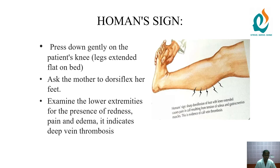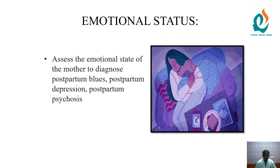To check Homan's sign and rule out deep vein thrombosis (DVT): press down gently on the patient's knee with the leg extended flat on the bed, and ask the mother to dorsiflex her feet. The nurse should hold the calf muscles with one hand and place the other hand on the sole. Examine the lower extremities for redness, pain, and edema — these indicate deep vein thrombosis during dorsiflexion.